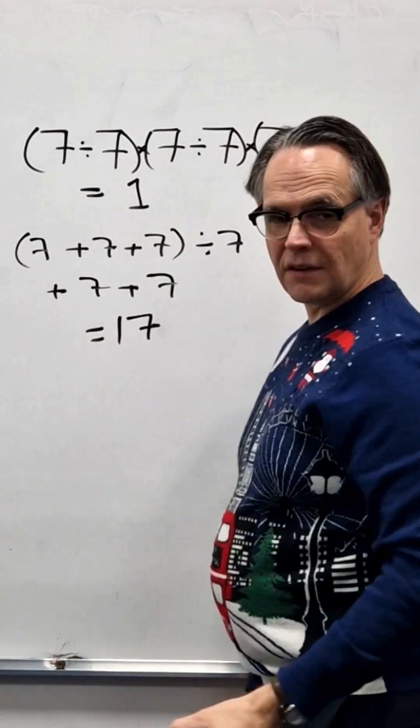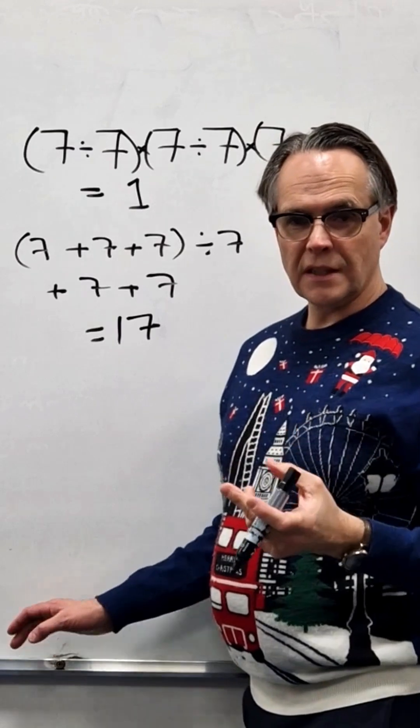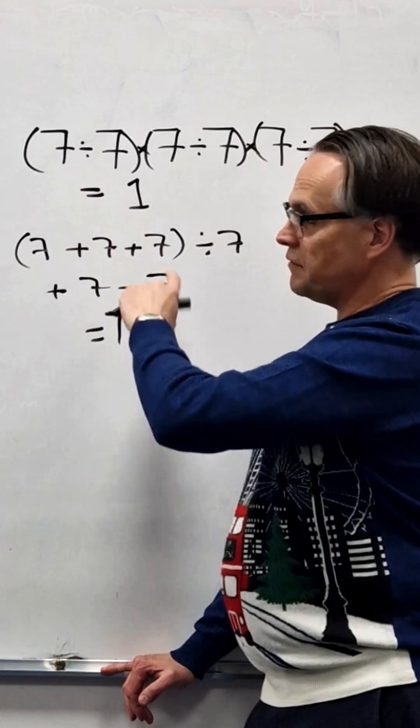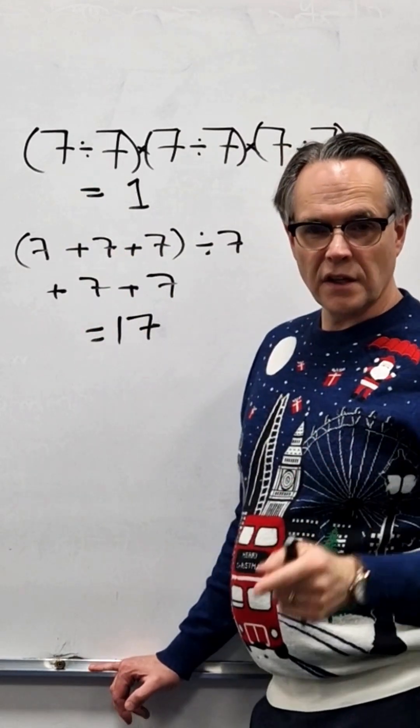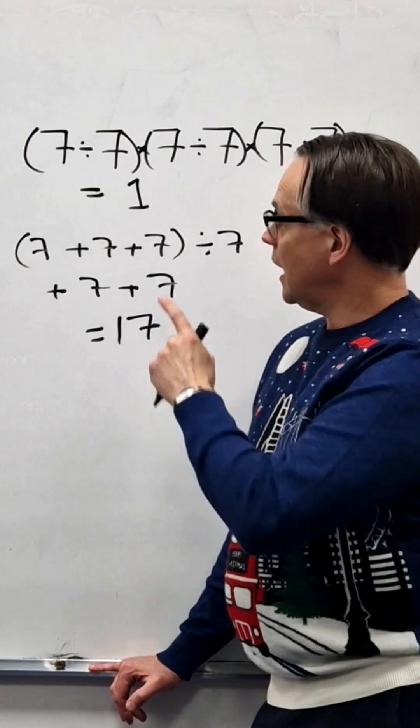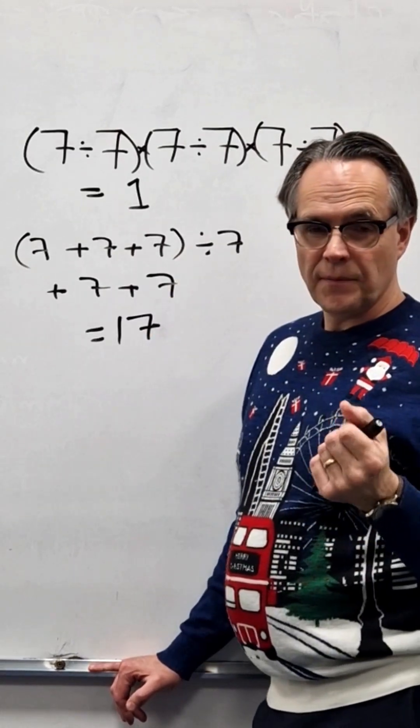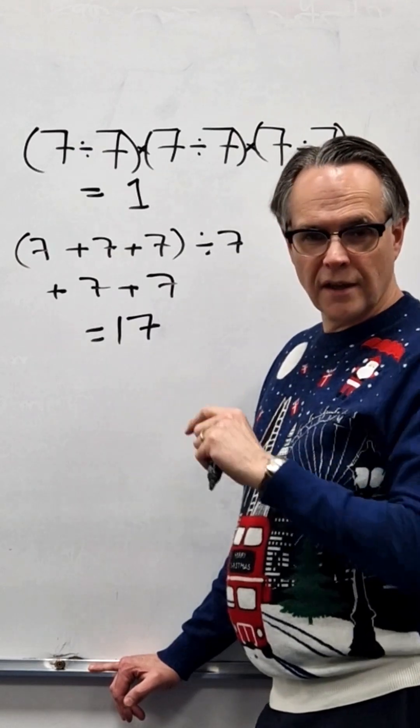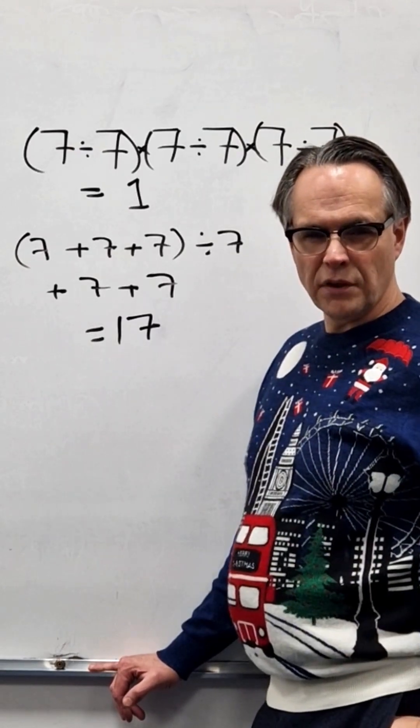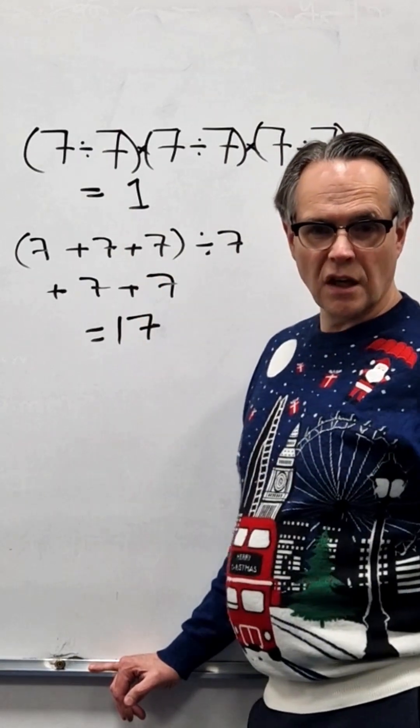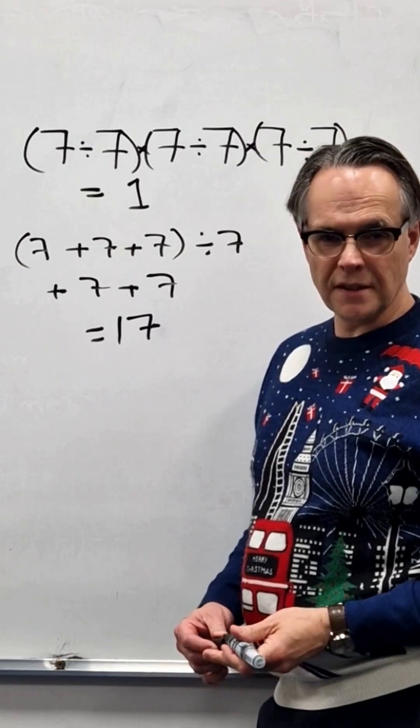So we can make 1, we can make 17. The puzzle is, what other numbers can you make from 6 sevens just by putting different signs in? I know for certain you can make the numbers from 1 to 17. You can make 18 if you allow for one extra little tweak of the rules. See what numbers you can make. Put your solutions in the comments. Let's see how many numbers we can make between us.